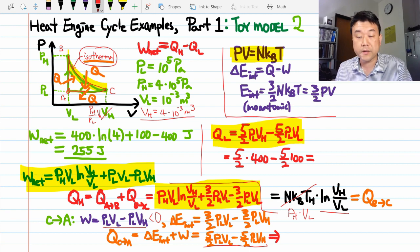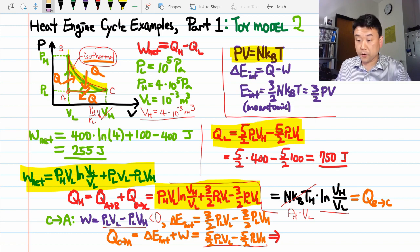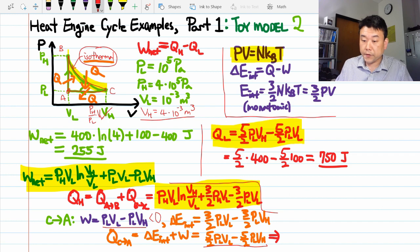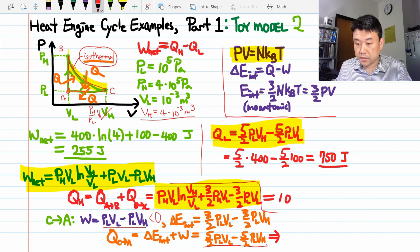That's equal to 300 divided by 2, 150 times 5, 750 Joules. Now, like before, we can use conservation of energy to figure that QH must be work done plus QL or 1005 Joules.